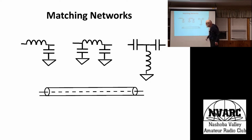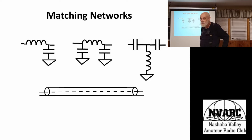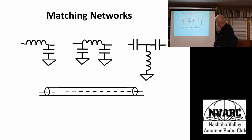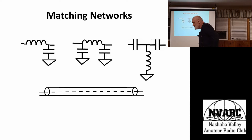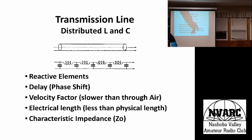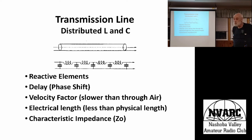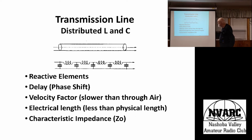There are many ways to match depending on what you're trying to do and how much frequency range you need — L sections, pi networks, T networks — and there's also a lot of art in using a transmission line itself as part of your matching network. Since your antenna is somewhere back in the woods so the neighbors won't complain, you're going to need a transmission line.